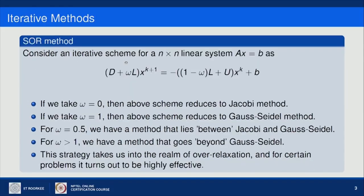Consider an iterative scheme for an n by n linear system Ax equals b of this form: (D + ωL)x^(k+1) = −(1−ω)L + U)x^(k) + b. If I put omega equals 0, this scheme converts into the Jacobi scheme, giving D times x^(k+1) on the left and −(L+U)x^(k) + b on the right. If I take omega equals 1, this scheme becomes the Gauss-Seidel method.